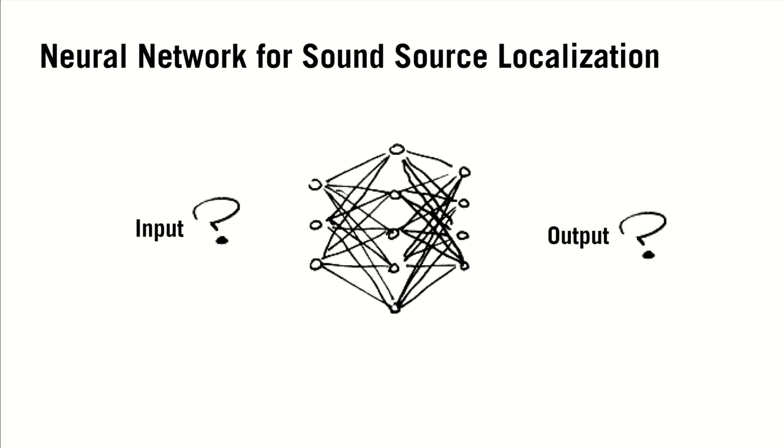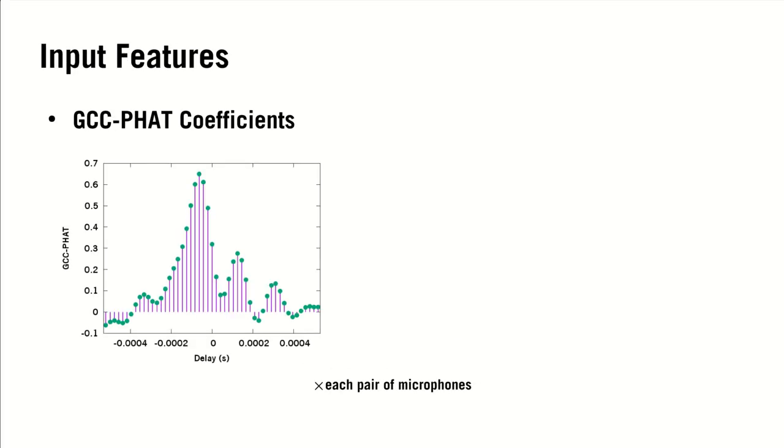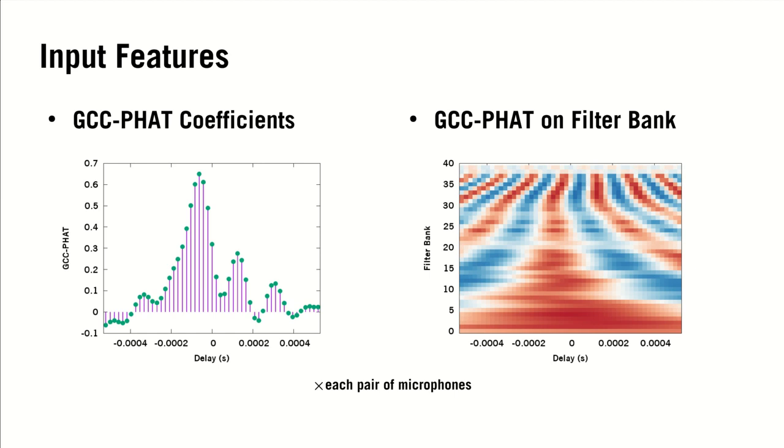So how does our neural network work for such problem? We consider two types of input features for the network. The first feature is the center coefficients of the GCC-PHAT function computed for each pair of microphones, and the other type is the GCC-PHAT on mel scale filter bank. Since different sources in general dominate different time frequency bins, this feature provides the sub-band information that allows easier detection of multiple sources.